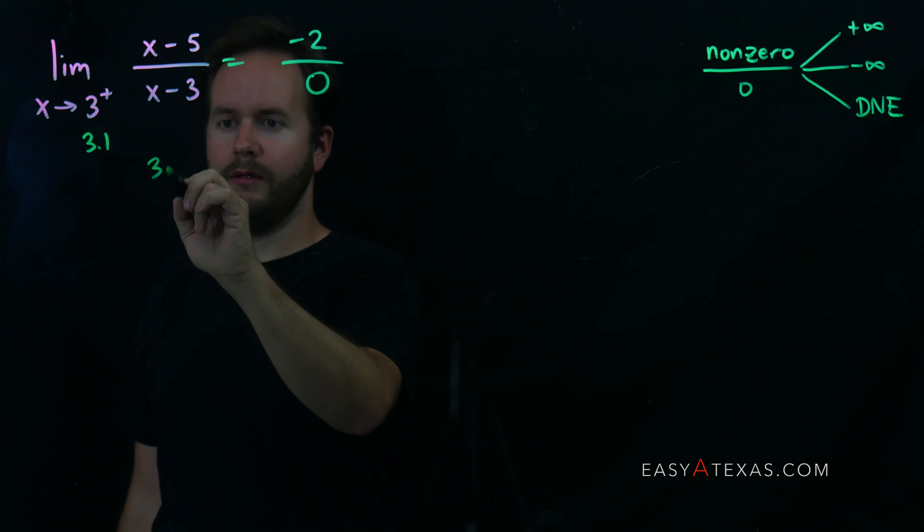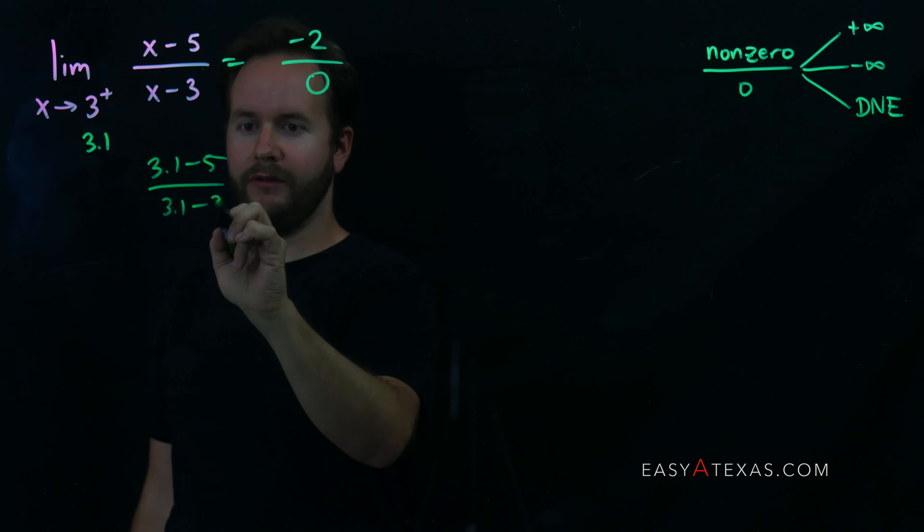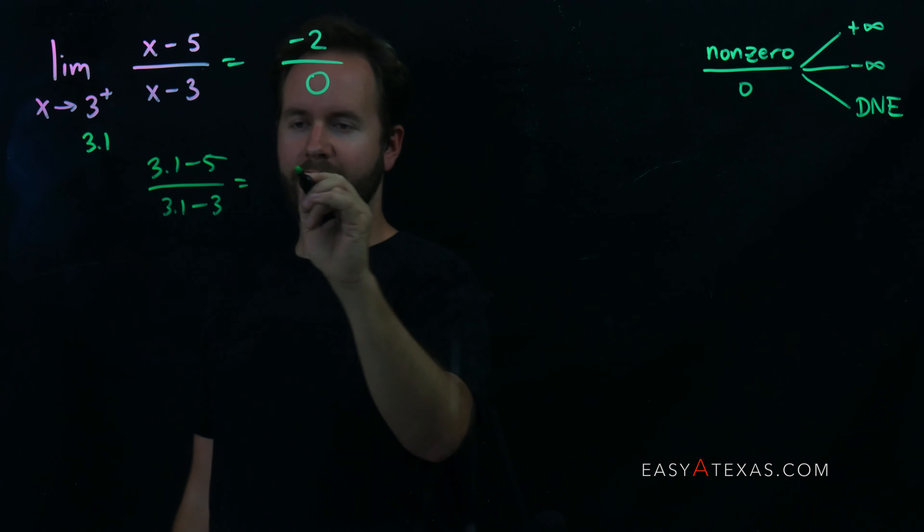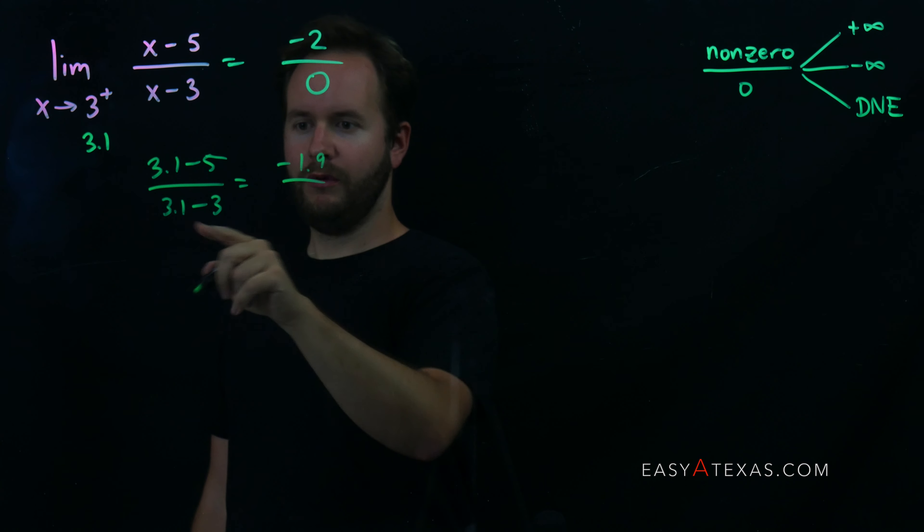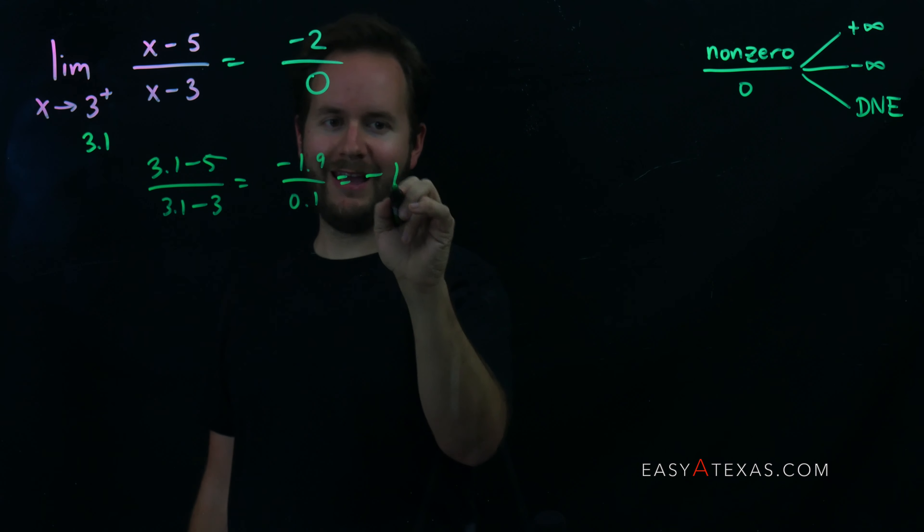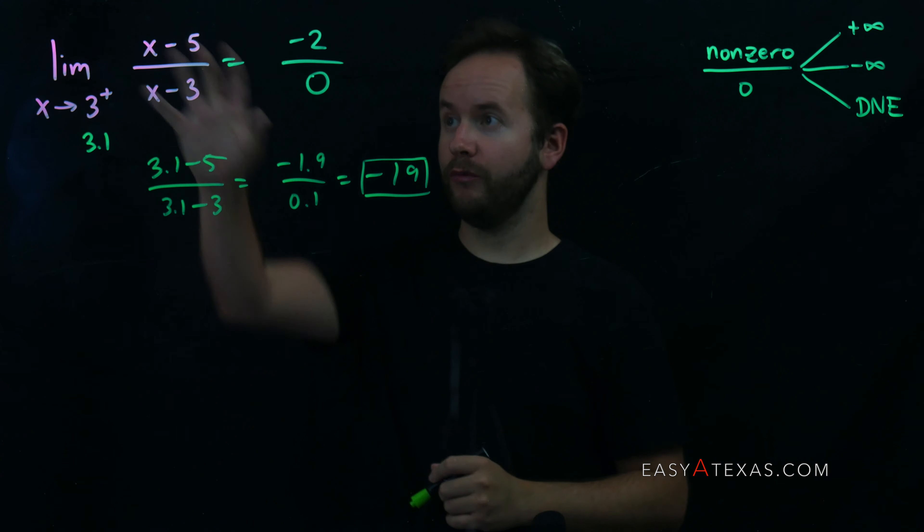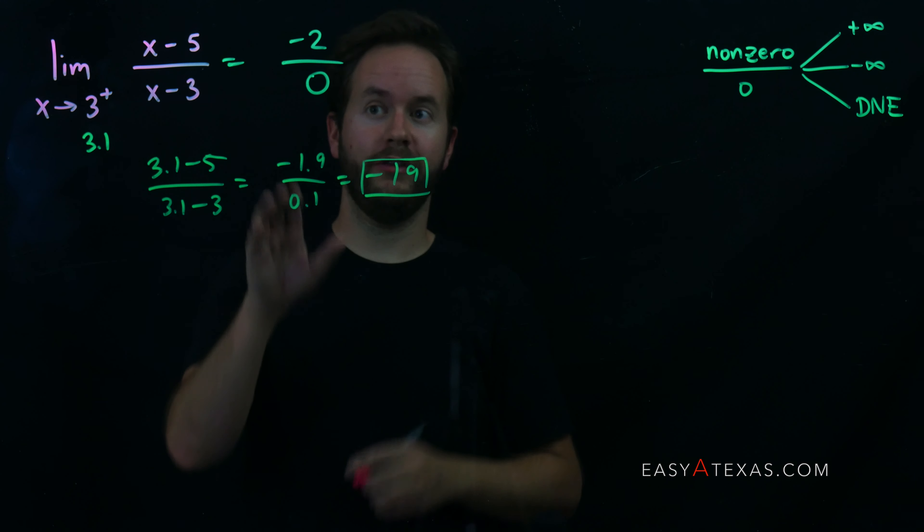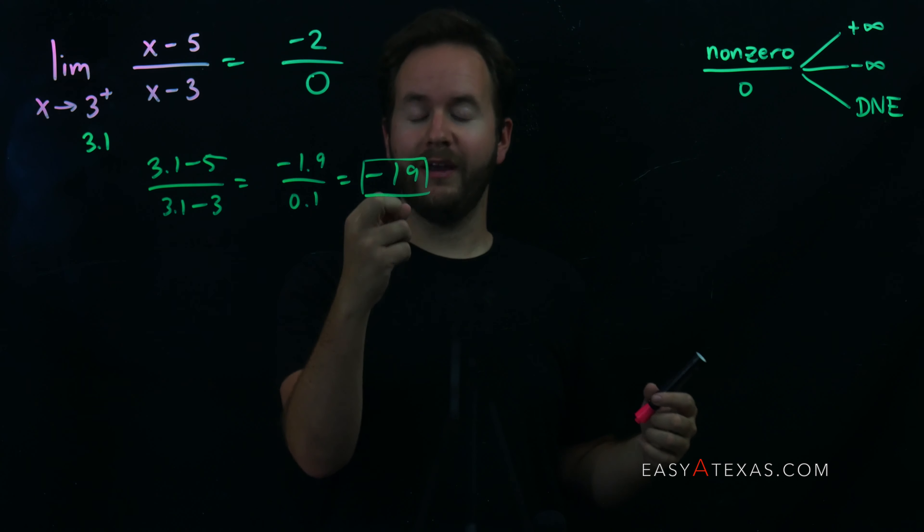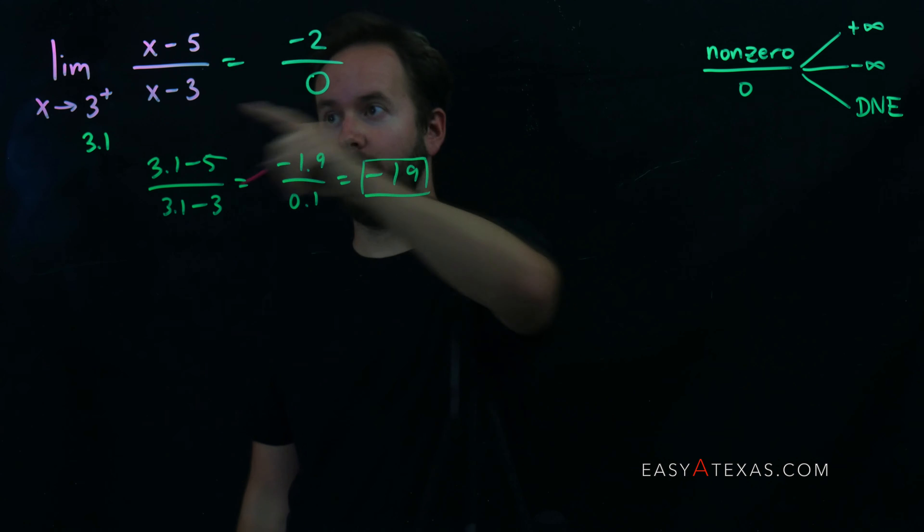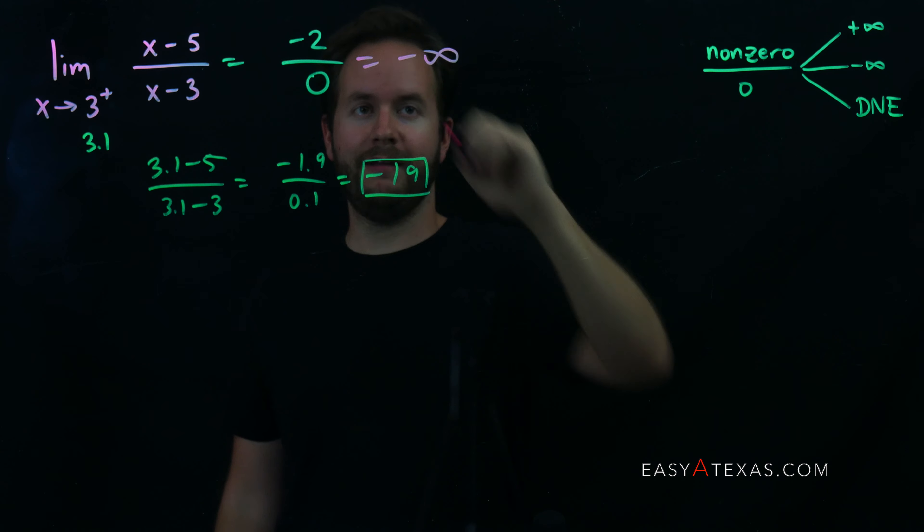3.1 minus 5 over 3.1 minus 3. 3.1 minus 5 is negative 1.9, 3.1 minus 3 is 0.1, which gives me negative 19. That is a negative number, so that tells me this original limit, remember how we said the result was either going to be infinity, negative infinity, or does not exist? Well, because I got a negative result here, I know this limit will result in negative infinity.